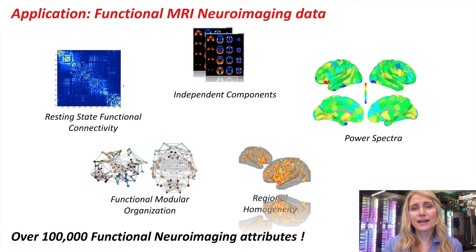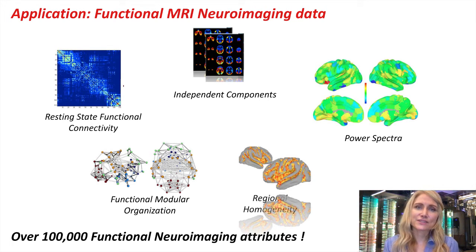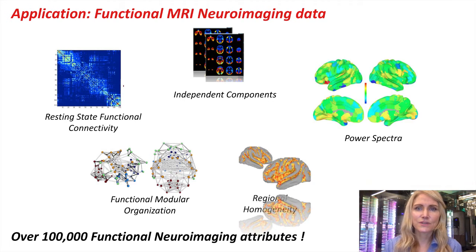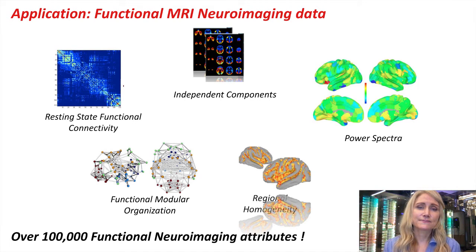Our next step was to determine how to extract features from the resting state functional MRI data. The first thing we did was calculate resting state functional connectivity matrices, or pairwise time series correlations between different brain regions. We then calculated the total number of independent components required to describe 99% of the data variance. We also calculated power spectra, regional homogeneity, and a number of different graph theoretic metrics, like functional modular organization. Overall, this resulted in more than 100,000 functional neuroimaging attributes.